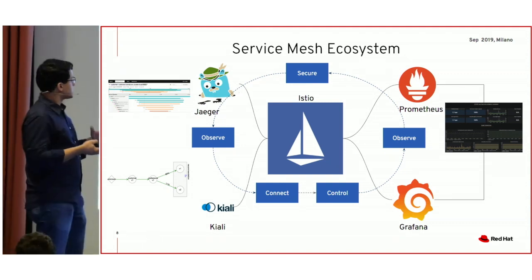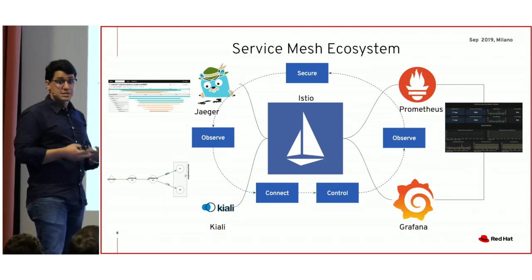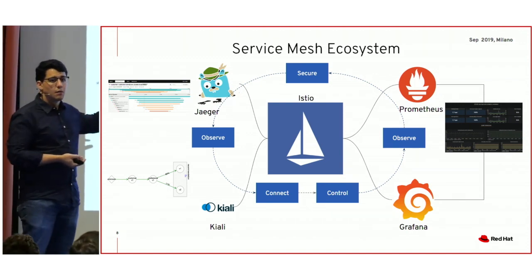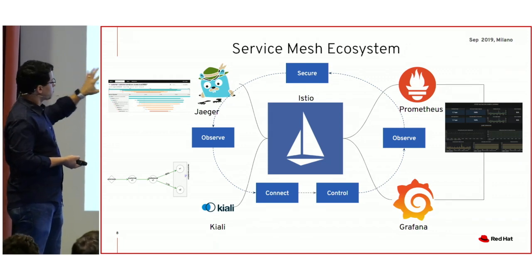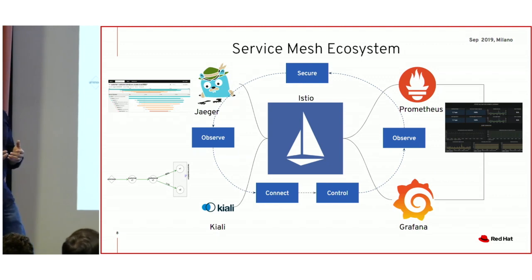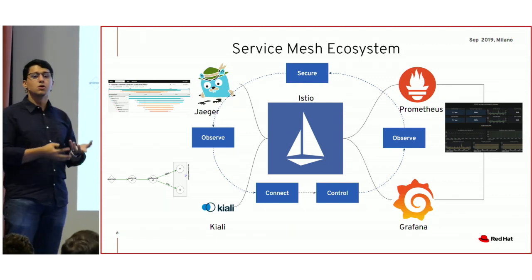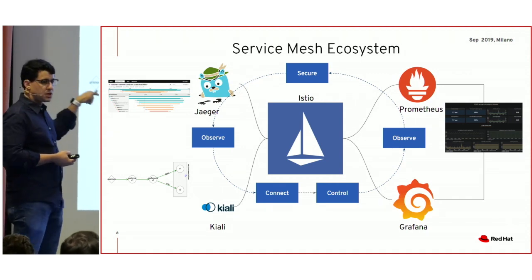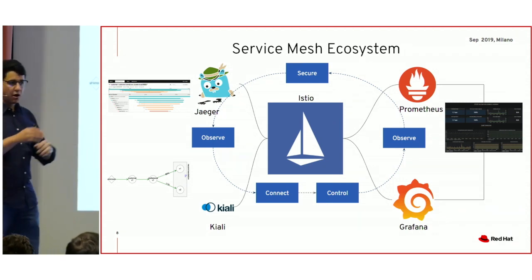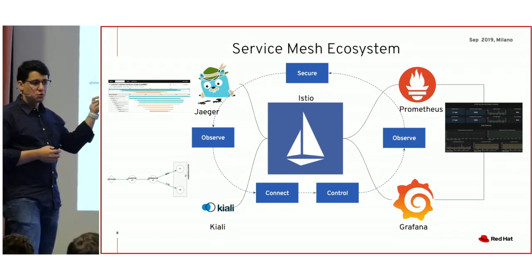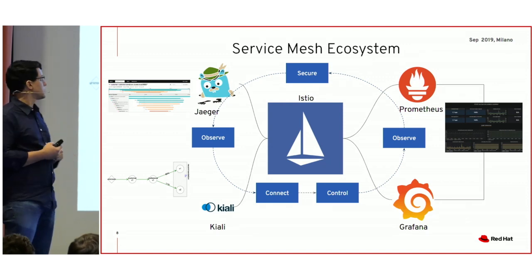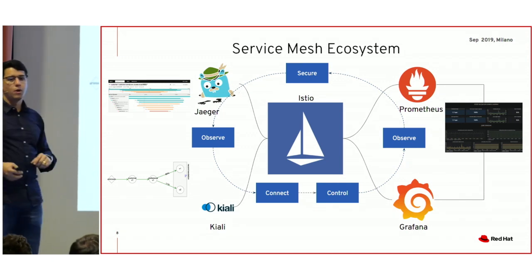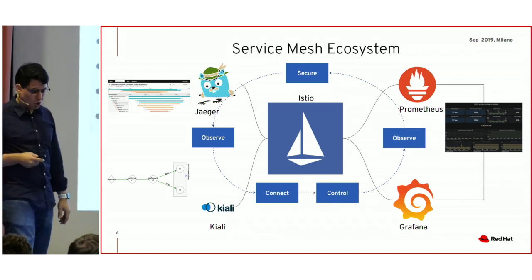This takes us to what we are calling, as a product, OpenShift Service Mesh. Istio is one of the components, but with OpenShift Service Mesh, Istio is at the core, and we are packaging other technologies and distributing them as a single operator you can install on the platform. Those technologies are Jaeger, Kiali — a visualization tool — Grafana and Prometheus for monitoring, and Jaeger for tracing. This whole package is what you get when you install OpenShift Service Mesh; it's not only Istio.